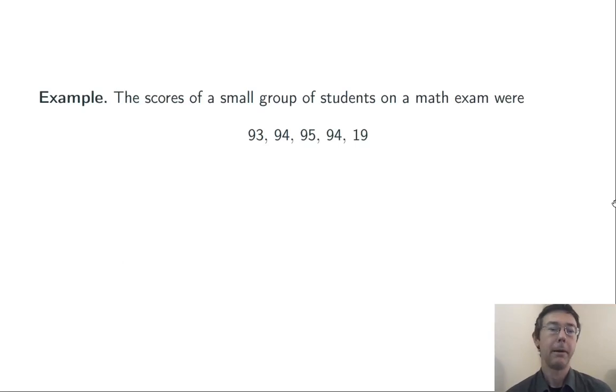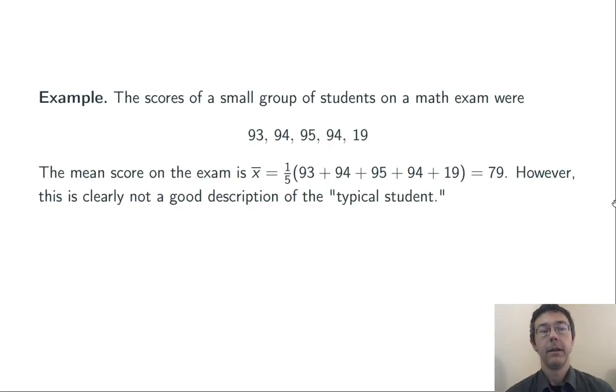Here's an example of what I'm talking about. A very small data set in this case, just five values. And I'm imagining these to be scores on an exam by, say, five friends: 93, 94, 95, 94, and 19. So four people did very well, and one person did very poorly. The mean on the exam in this case is 79. But I don't think that's a good description of how well the typical student did on this exam. The typical student was in the mid-90s, and we just had one that was much lower. 79 isn't a good measure in that case. The median, 94, is much more descriptive here.